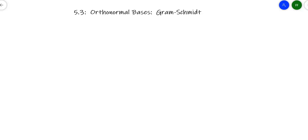Here we'll start talking about bases and orthonormal bases, and eventually we'll get to everyone's favorite orthonormalization process, and that is Gram-Schmidt. So the first thing is a sort of a concept idea. Let's take a look at i, j, and k, those unit vectors in R3.